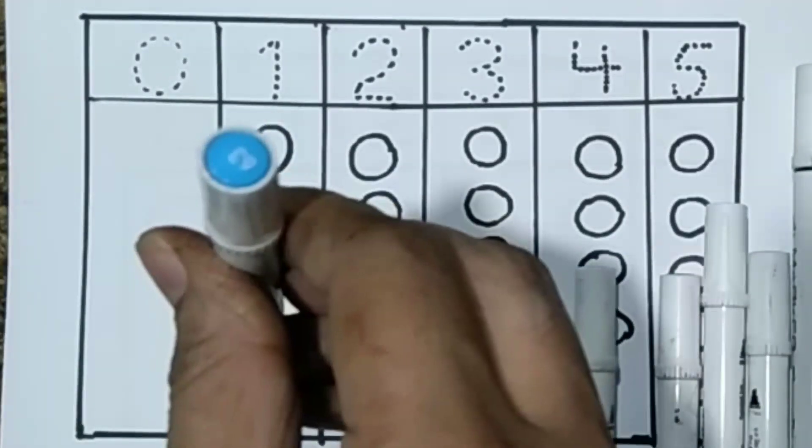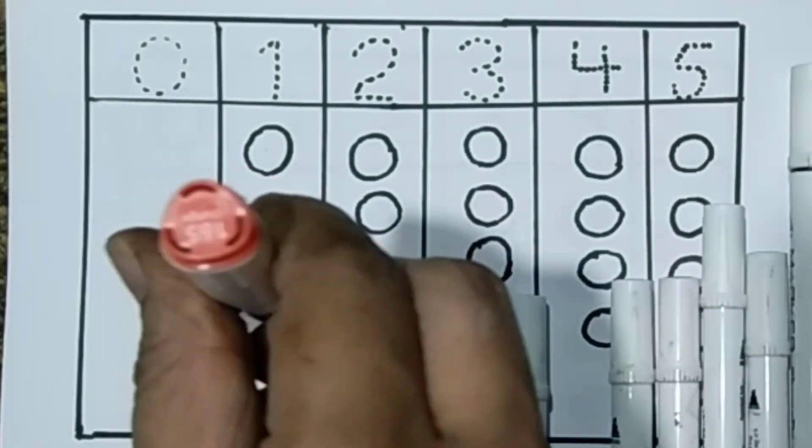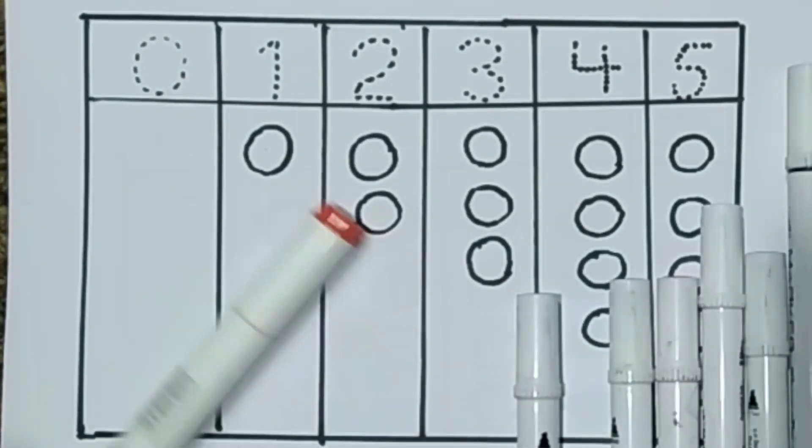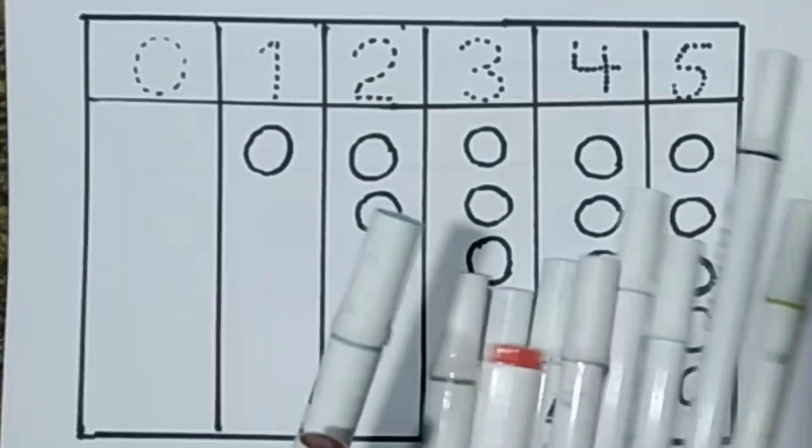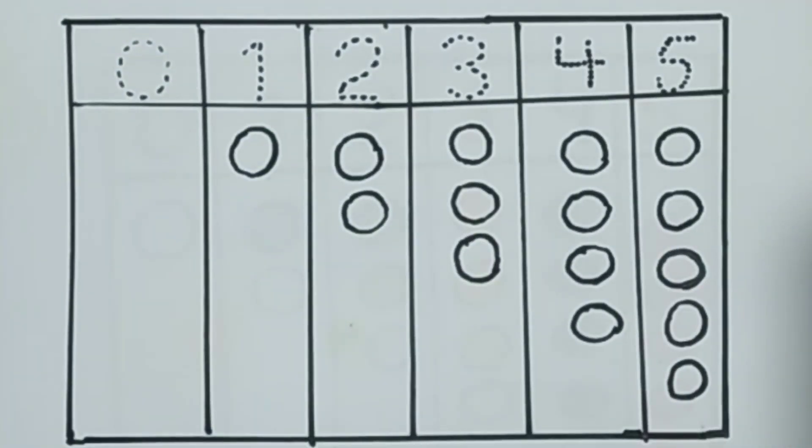This is a dark brown color. This is a blue color. And the last orange color. Light green color. These are all colors.